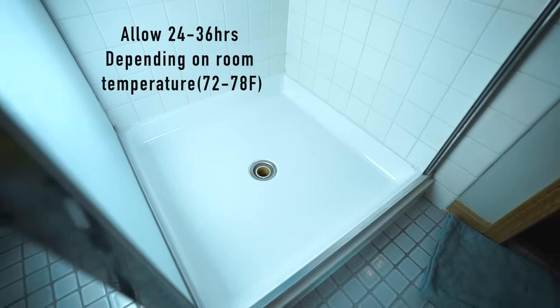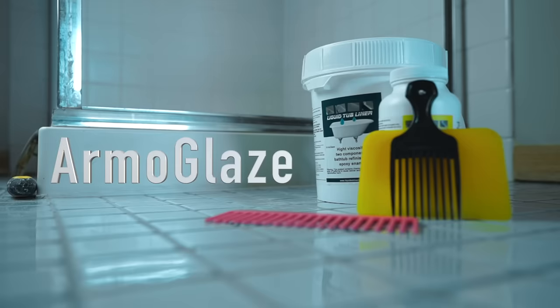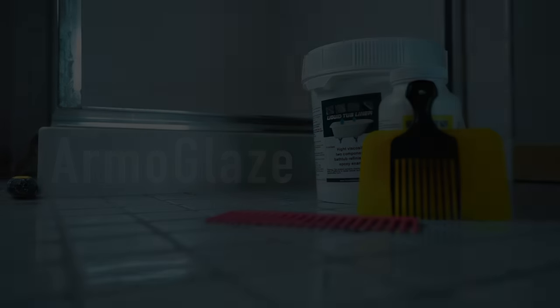Allow 24 to 36 hours for the paint to dry completely depending on room temperature which should be about 72 to 78 degrees Fahrenheit. Armor Glaze. Enjoy the new look of your shower.